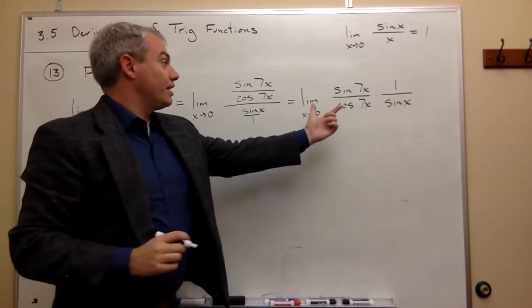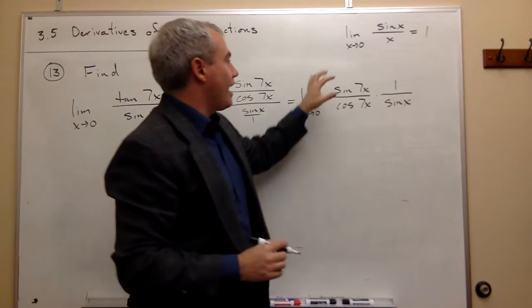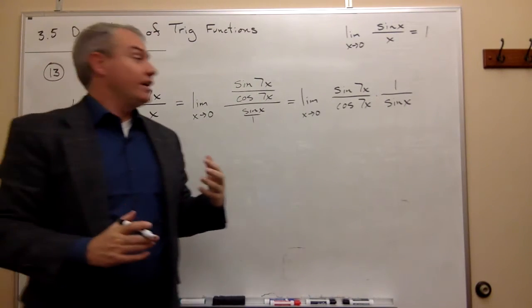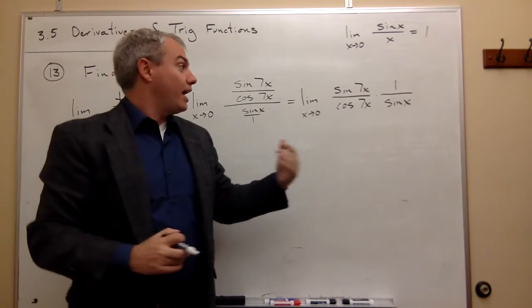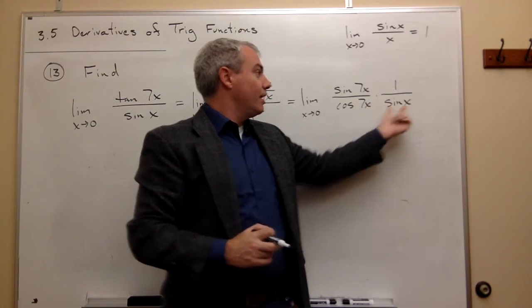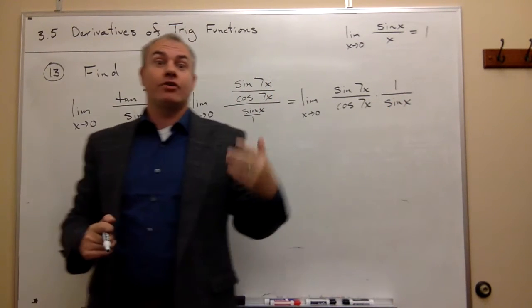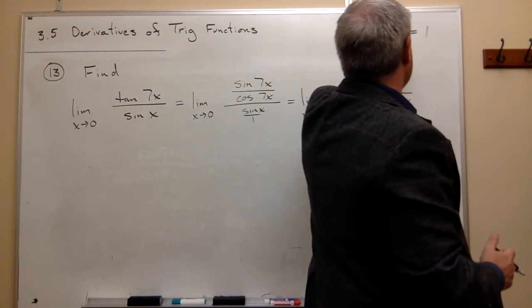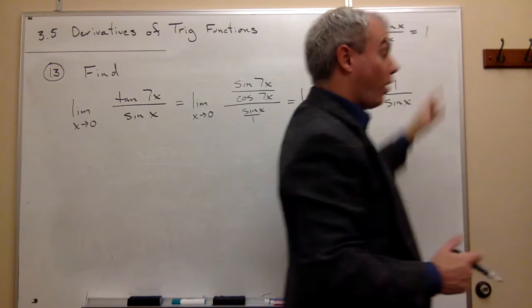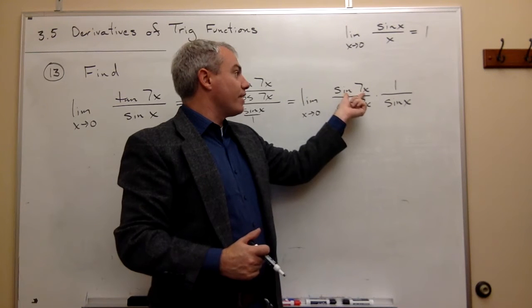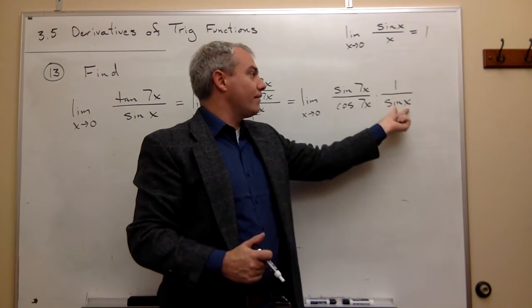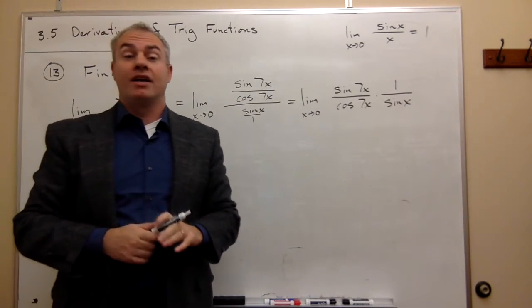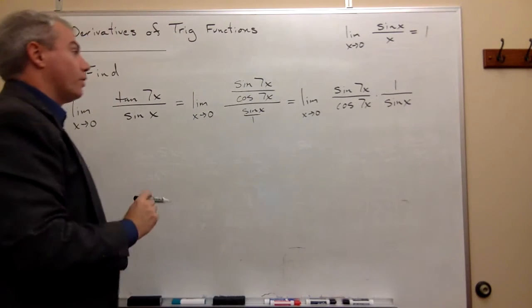Now that we have this set up, we see we have sine of 7x on top — it would be really great if we had 7x on the bottom. And on the bottom we have sine of x, so it would be really great if we had an x on the top. In both of those situations, we could use the known limit to say that equals one. So on the bottom of sine of 7x we'd like a 7x, and on the top of sine of x we'd like an x. The policy is: let's just put in what we want and see what damage we've done.